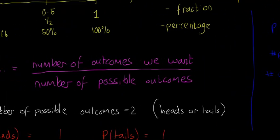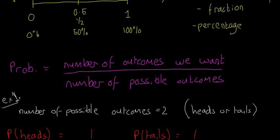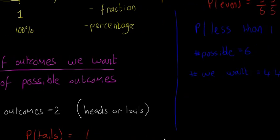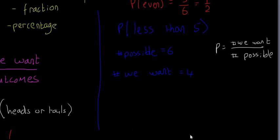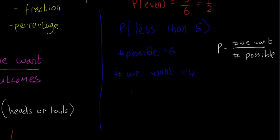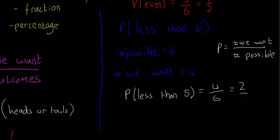The probability formula is: number of outcomes we want divided by number of possible outcomes. So P of less than five equals four over six, which simplifies to two over three. This is much easier to write as a fraction than as 0.667 or 66.7%. This is an example where fractions are the clearest representation.